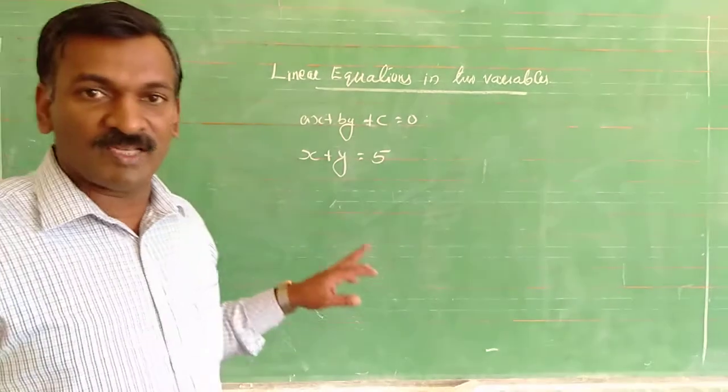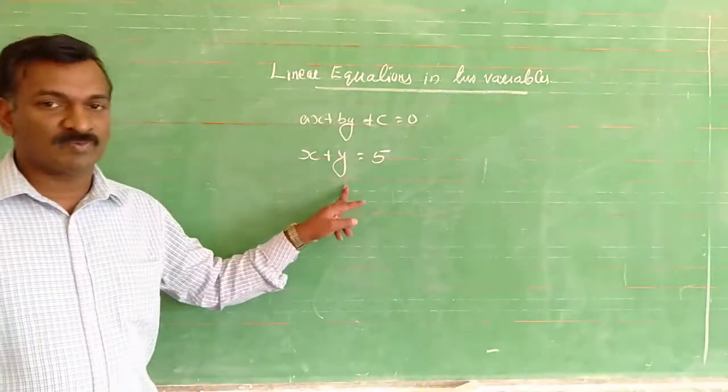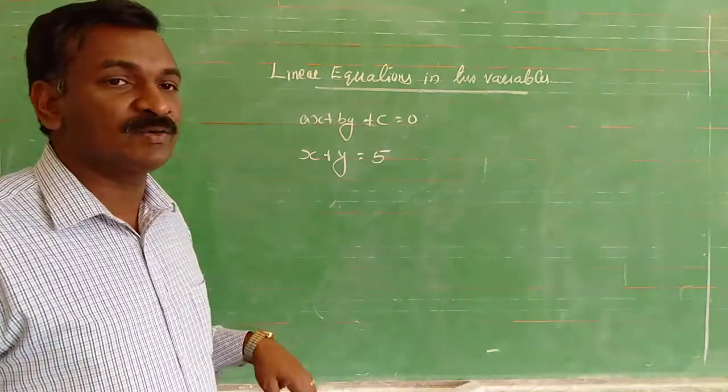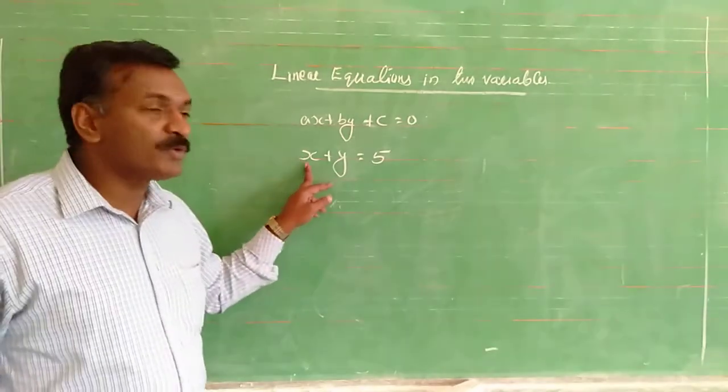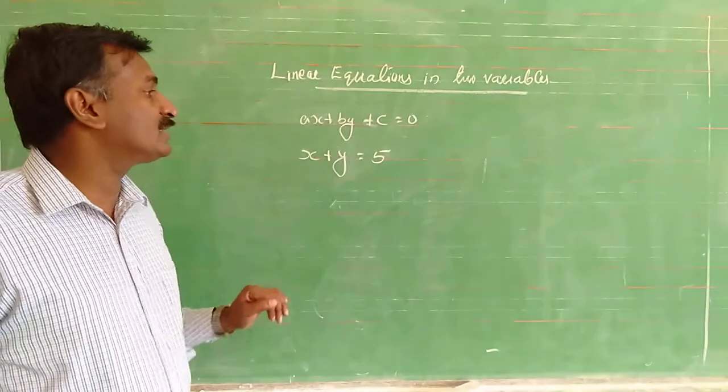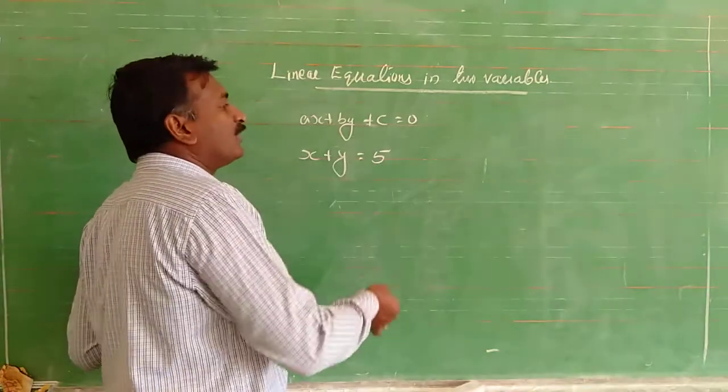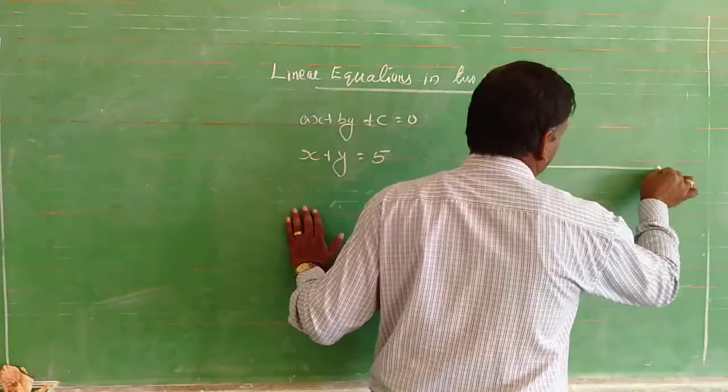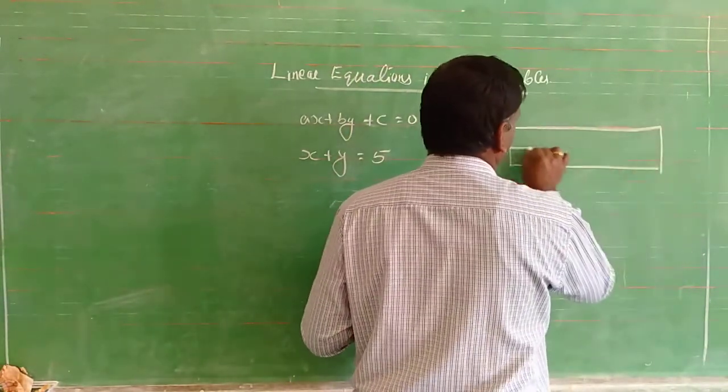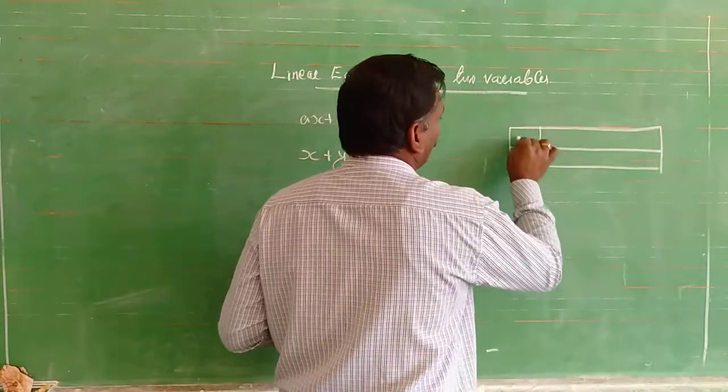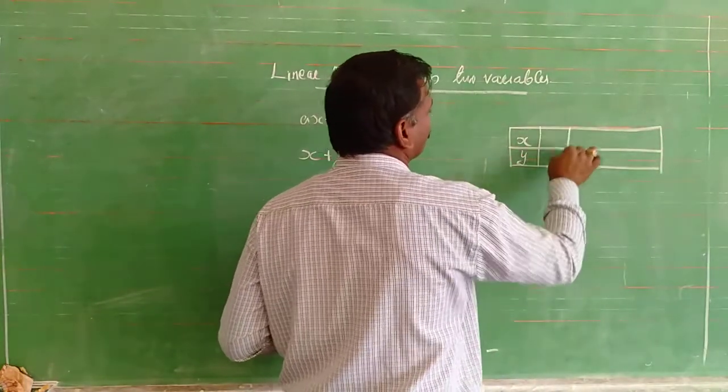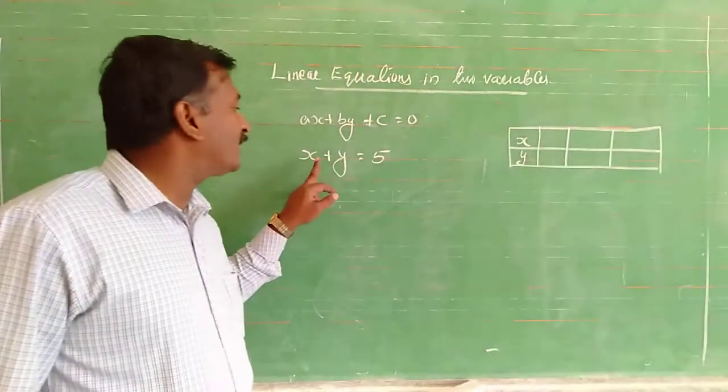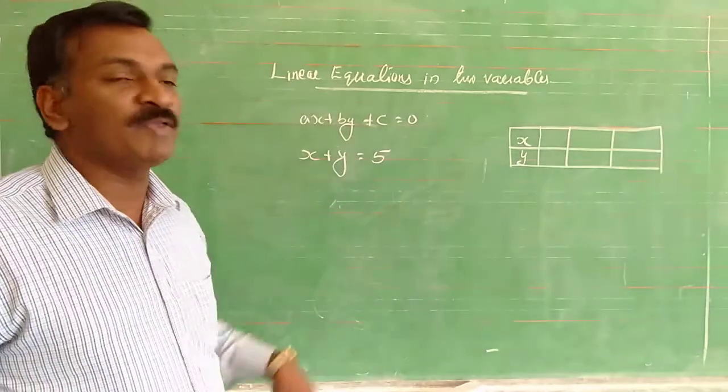Here x and y are the variables, we can take any real number. Now we know how to draw the graph of x plus y is equal to 5. First we want to find out the coordinates of x and y. Any value we can take for x and the corresponding value of y we can find.